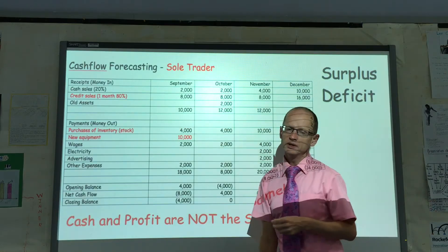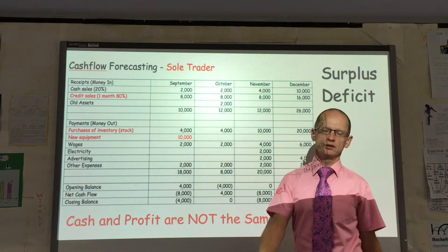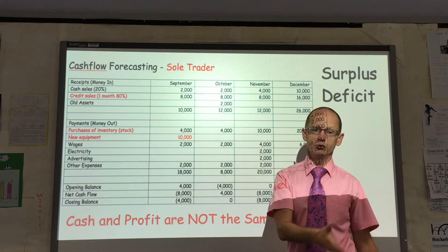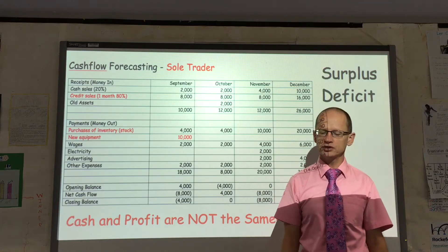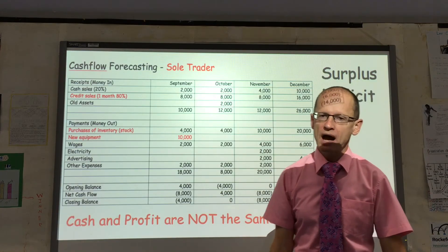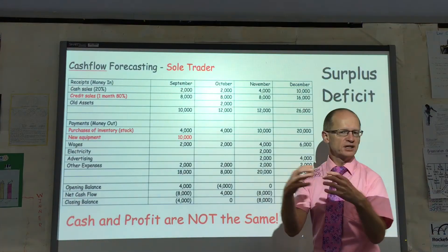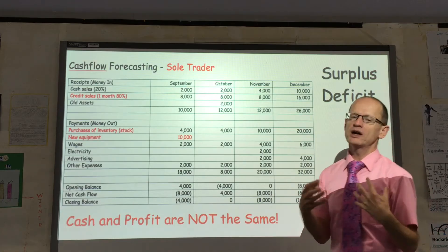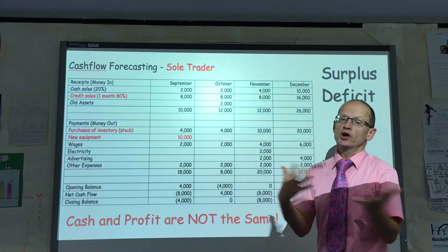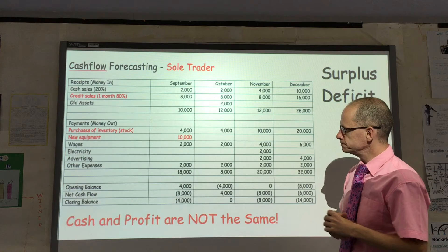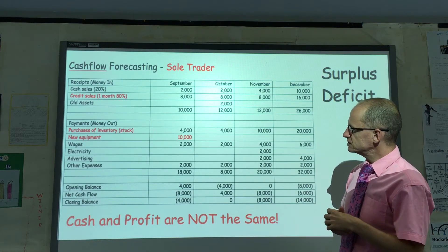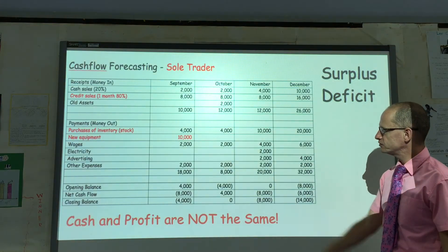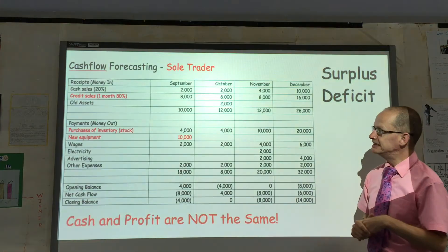One of the problems with credit sales is if you sell anything on credit to people, they may not ever pay you — then it becomes a bad debt which you have to write off. Or you may end up having to use a factoring company. If you're owed $10,000 and you go to a factoring company, they may only offer you $6,000, so you're not collecting all the money which is owed. Also, the reason I've increased the wages from $2,000 to $6,000 is because it's a seasonal business — if you're selling more in December, you're likely to have more workers.